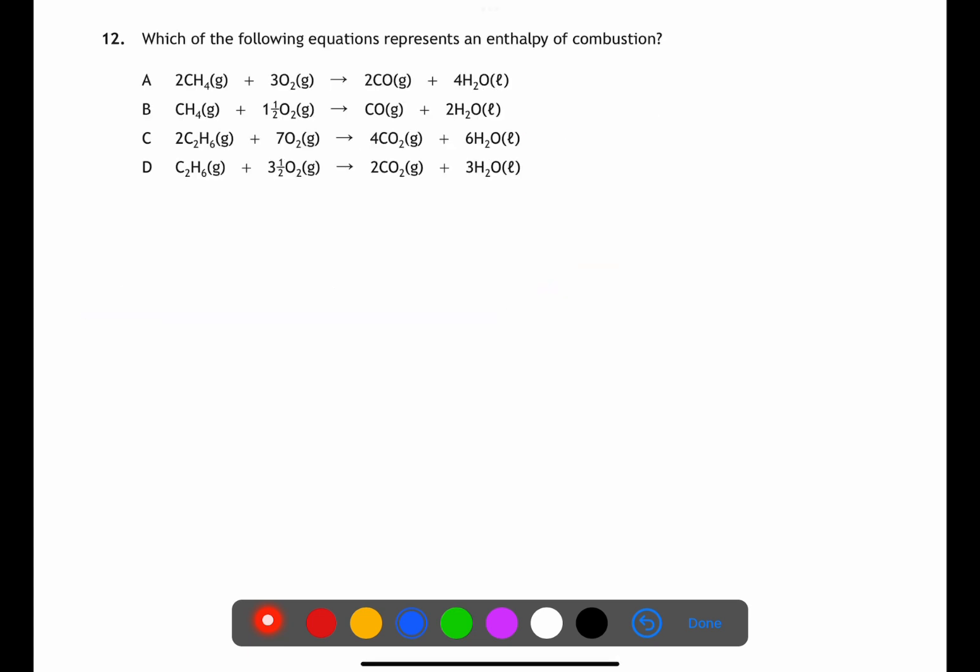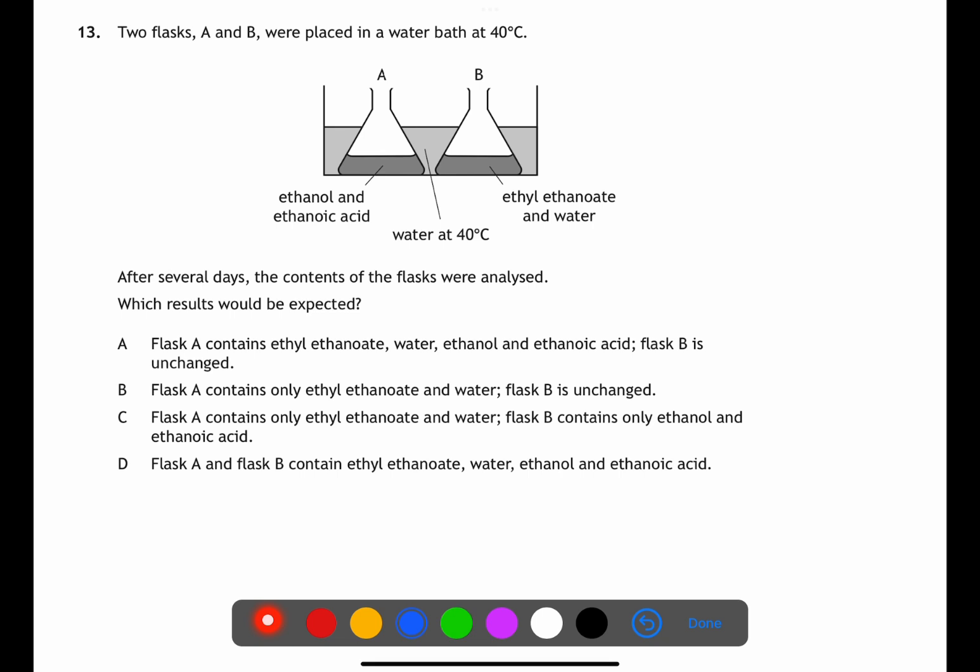In question 12 we're looking for an equation which represents an enthalpy of combustion. The definition of enthalpy of combustion is the energy released when one mole of a substance is burned completely in oxygen. This means that only B and D are possible answers. To burn completely in oxygen we need to produce carbon dioxide and water.